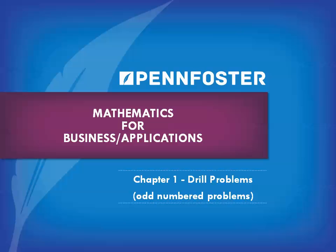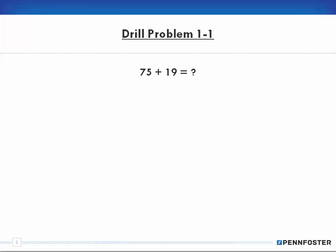Drill problem 1-1. It says to add 75 plus 19. So I take 75, add 19. 9 and 5 is 14, carry my 1. 1 and 7 is 8, plus 1 is 9. So my answer is 94.